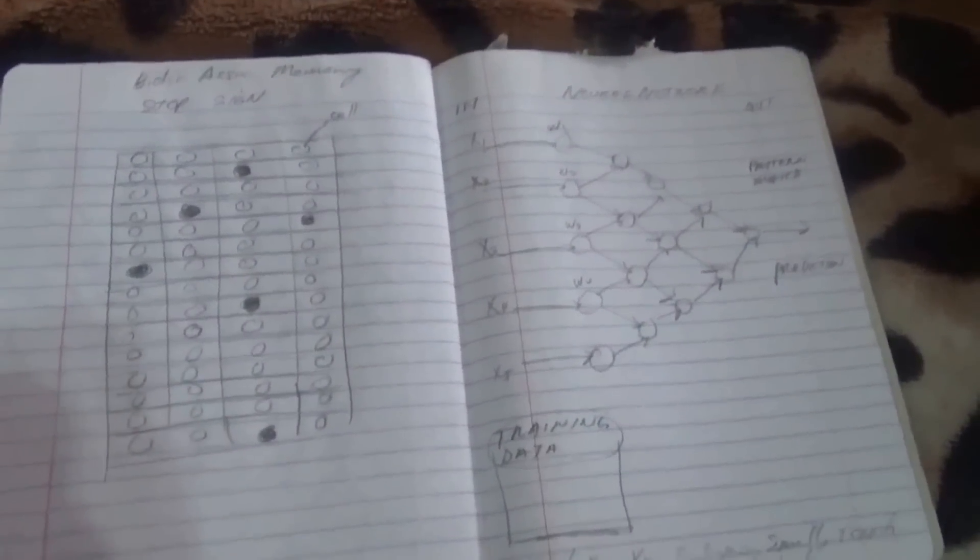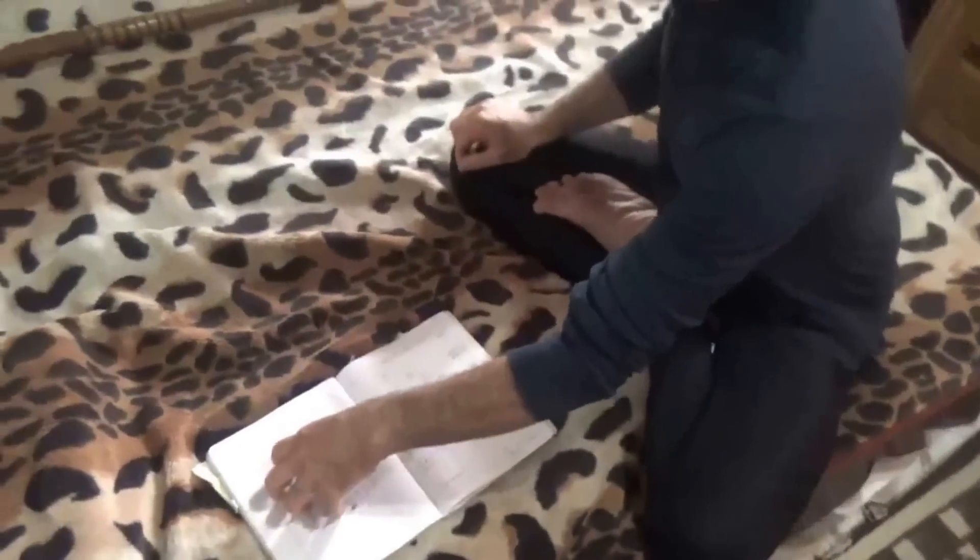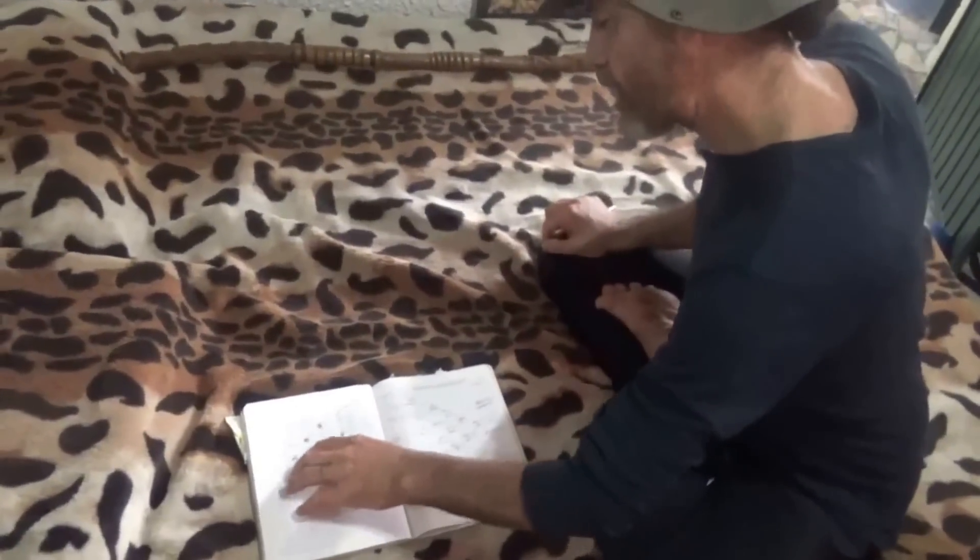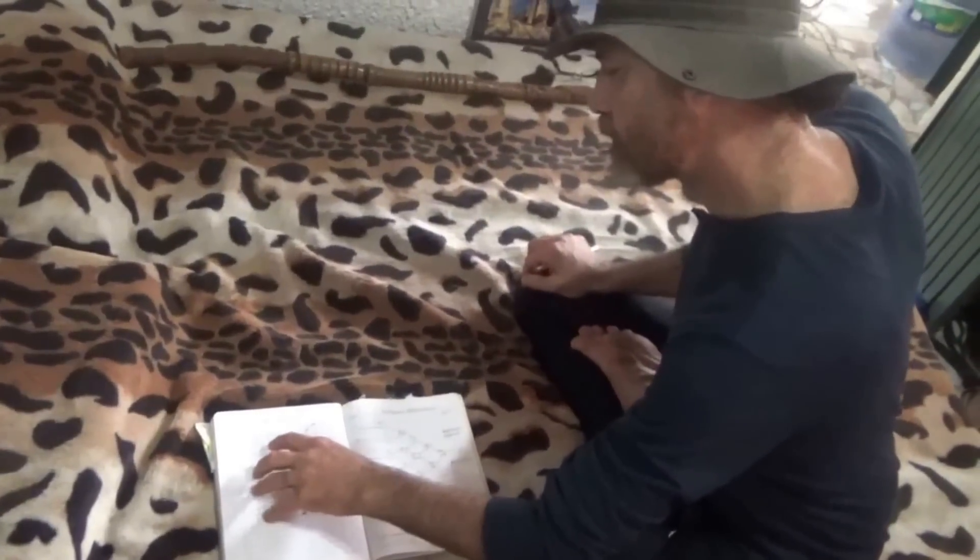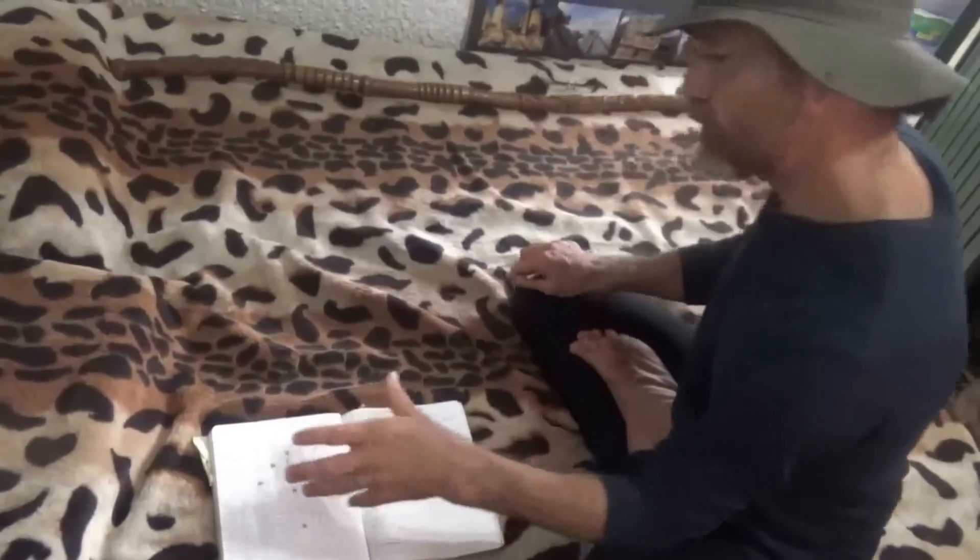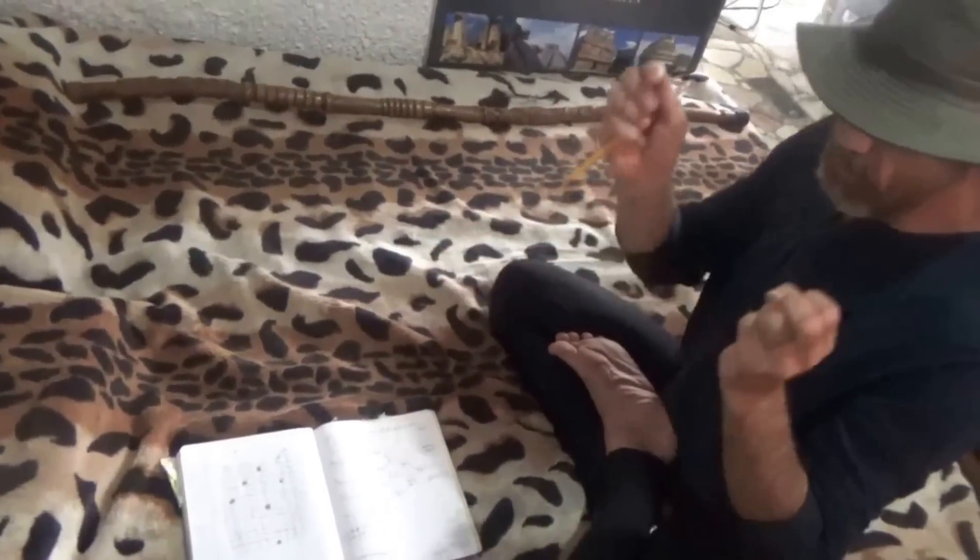So now imagine you see the stop sign different light level, different angle, different distance, and you see this multiple times over and over. Think of this training process of you being exposed to this object and it refines the connectivity of the neural dots in your bidirectional associative memory.